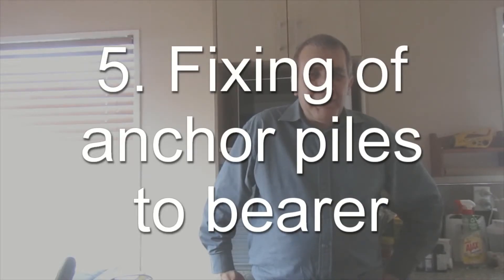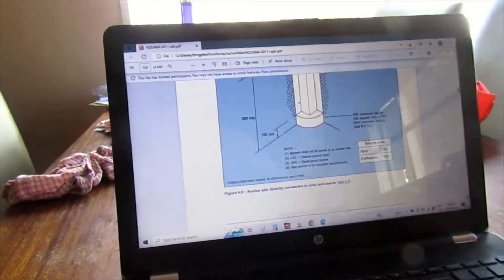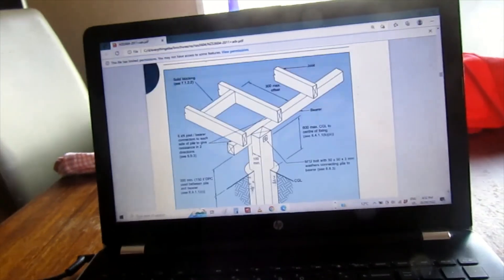With the fixing of the anchor pole to the bearer there's clause 6.9.3 which outlines this and also two diagrams figure 6.9 and 6.10. These are quite helpful showing how you can attach the bearer to the anchor pole and it's very clear.